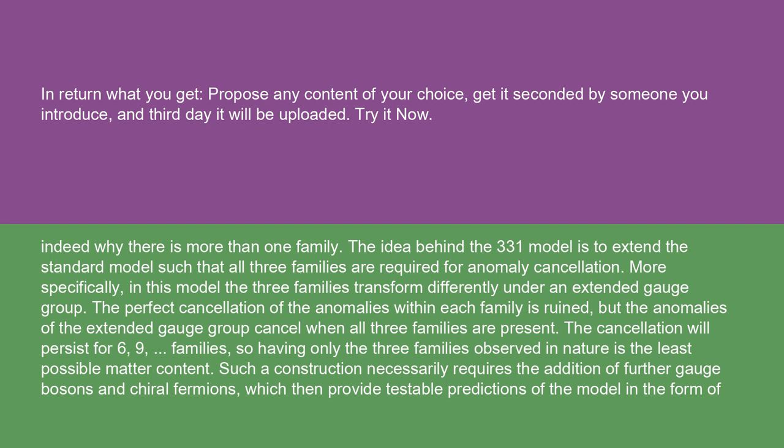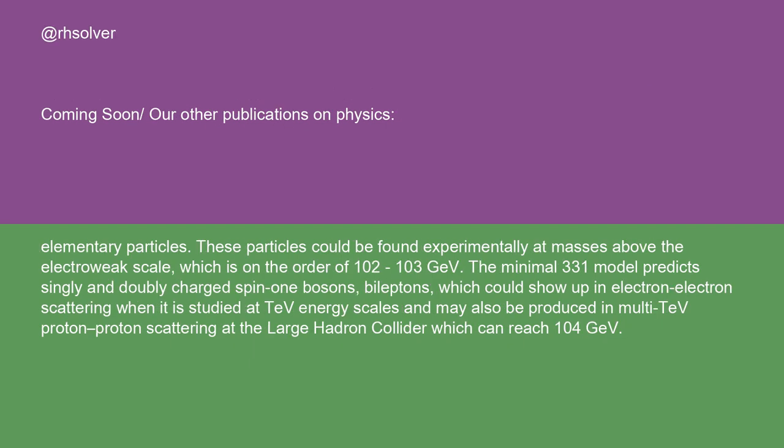Such a construction necessarily requires the addition of further gauge bosons and chiral fermions, which then provide testable predictions of the model in the form of elementary particles. These particles could be found experimentally at masses above the electroweak scale, which is on the order of 10² to 10³ GeV. The minimal 331 model predicts singly and doubly charged spin-1 bosons called bileptins, which could show up in electron-electron scattering at TeV energy scales and may also be produced in multi-TeV proton-proton scattering at the Large Hadron Collider, which can reach 10⁴ GeV.